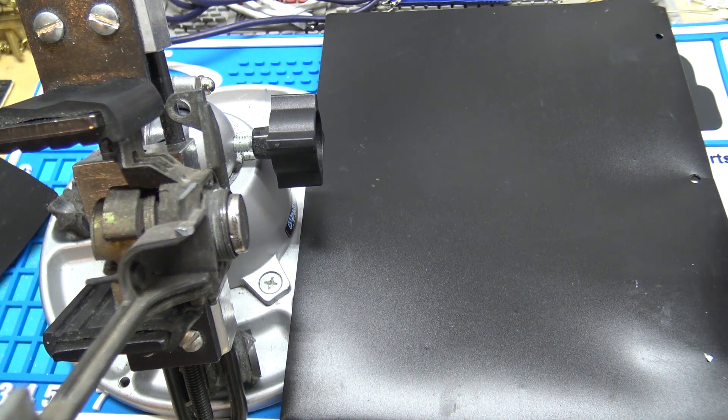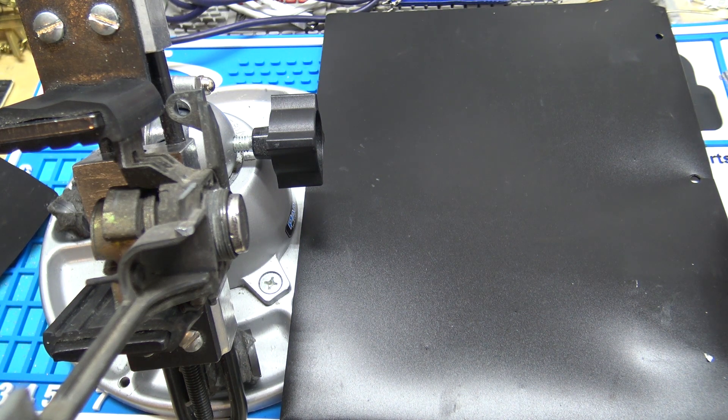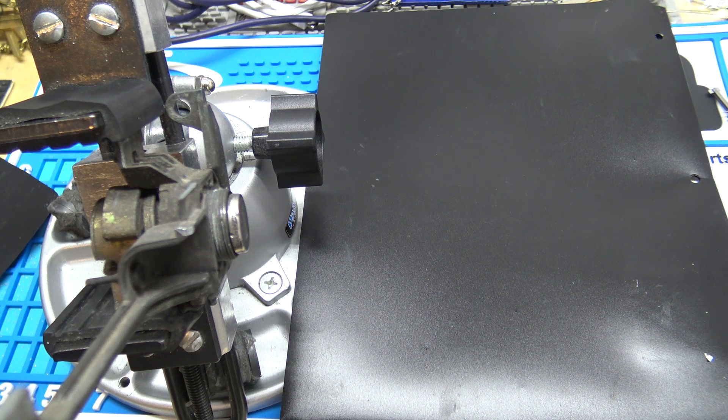The lock we're going to be working on today is from a 1996 BMW 3 Series, and this is one of the harder Lishis to use as far as picking and decoding goes.